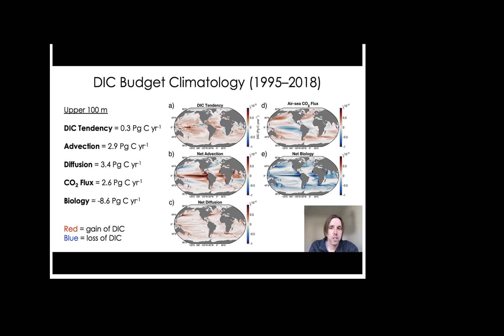Net advection, which is shown in panel B below, is the sum of the horizontal and the vertical advective components. This shows an increase of DIC from equatorial upwelling and a loss of DIC, primarily in Western boundary currents and their respective extensions.